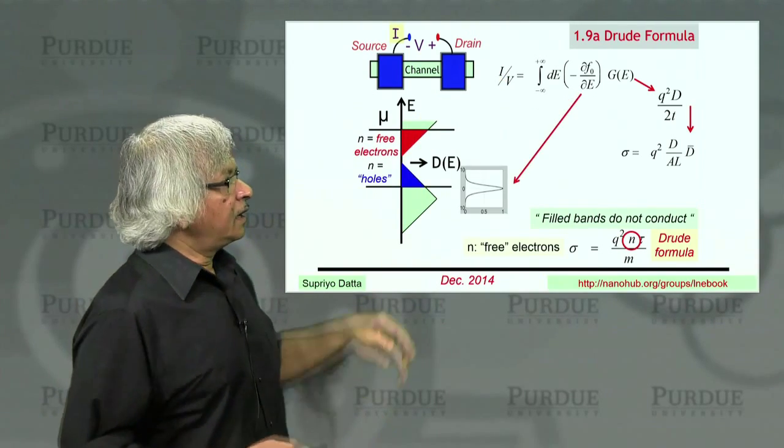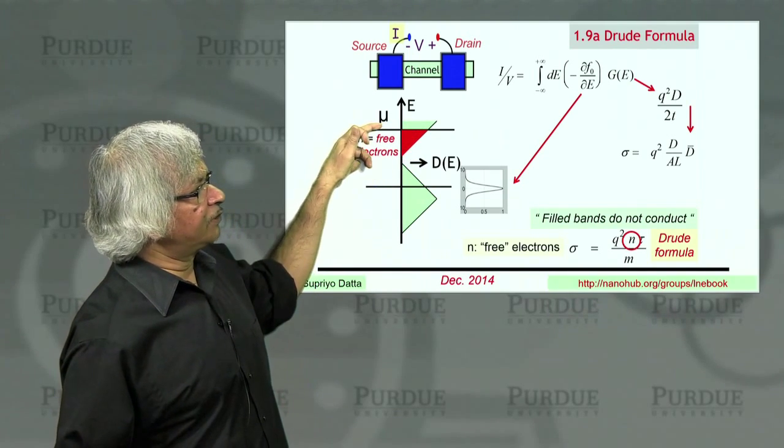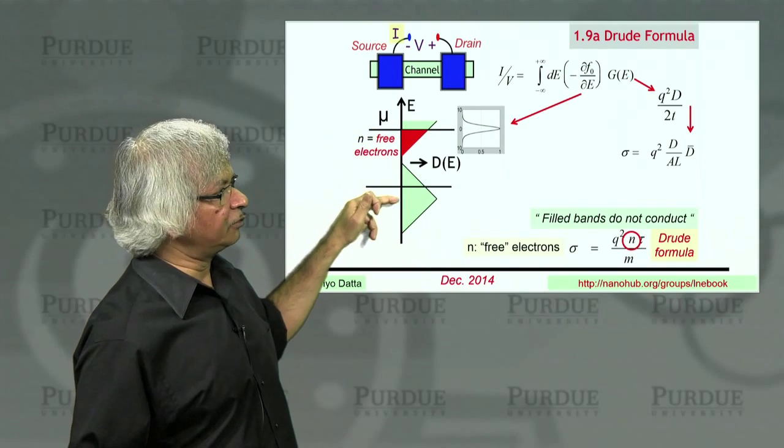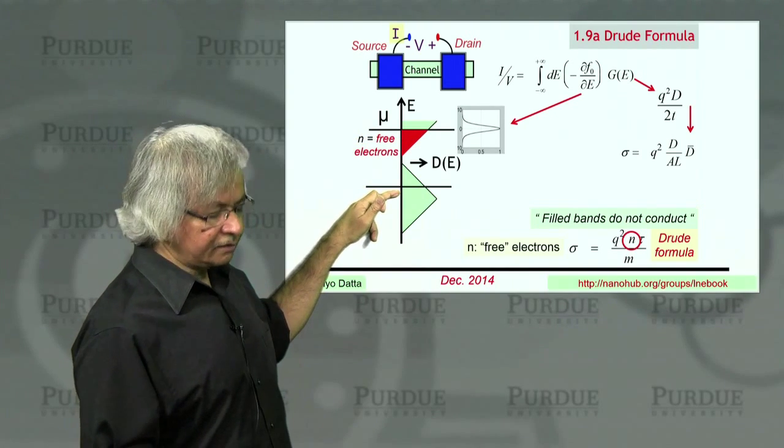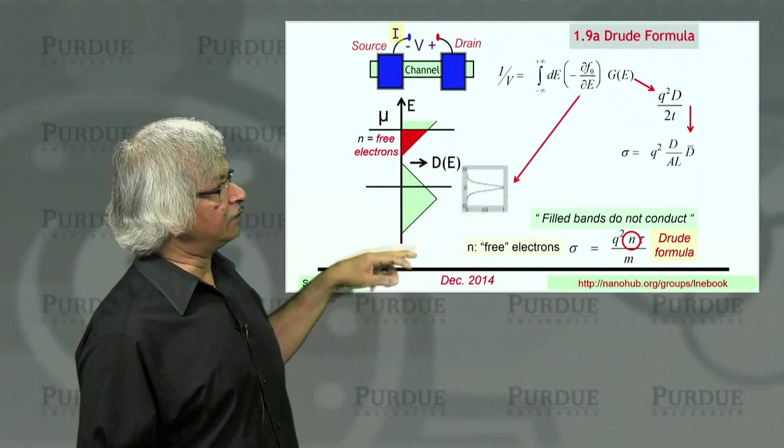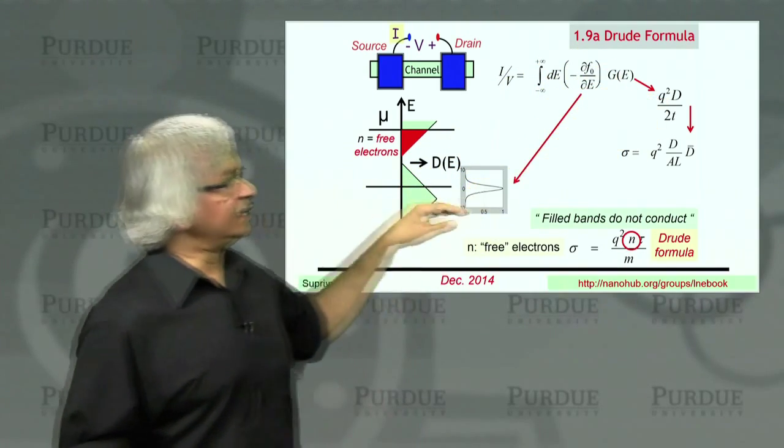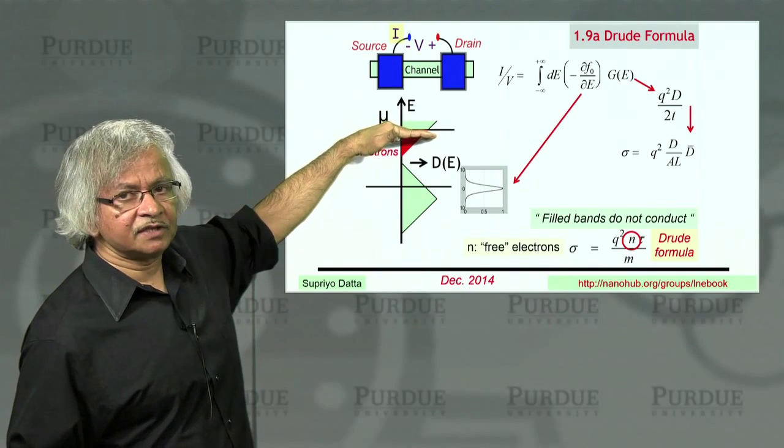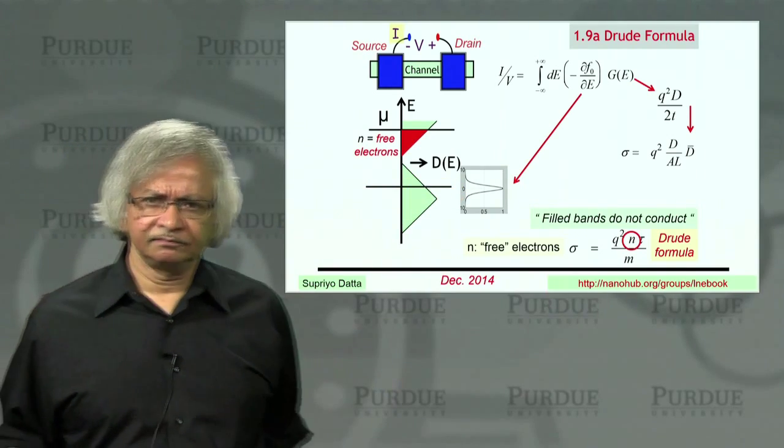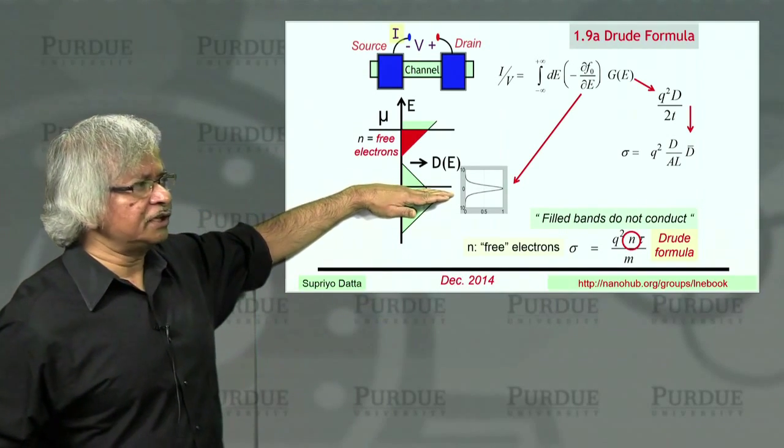Now, what you might think is, what would happen if, let's say the Fermi energy, instead of being here, like we have talked about, was actually down here? Well, from our point of view, all that happens is the DFDE moves down here. So when I'm looking at the conductance, this density of states, instead of looking at the density of states up here, I should be looking at the density of states down here. That's all. Nothing's changed. Same formula, just look at the density of states wherever your chemical potential happens to be.